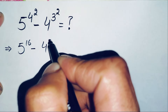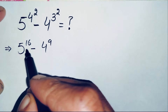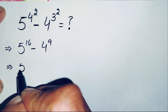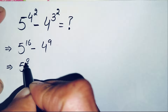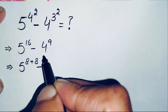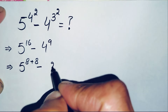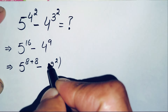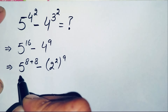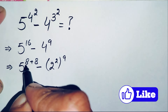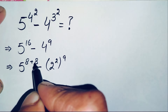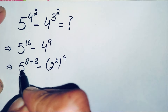Next, we can write power 16 as 8 plus 8, so this will become 5 raised to power 16. And we will change this power to its exponential form: 2 squared raised to power 9. Here in the first term we will use the exponential property: a raised to power (m+n) equals a raised to power m times a raised to power n.